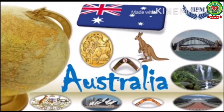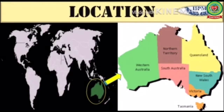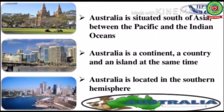Australia lies entirely to the south of the equator, so it lies in the southern hemisphere. Australia is situated south of Asia, between the Pacific and the Indian Ocean. Australia is a continent, a country, and an island at the same time. By the word island we mean a piece of land surrounded by water from all sides.